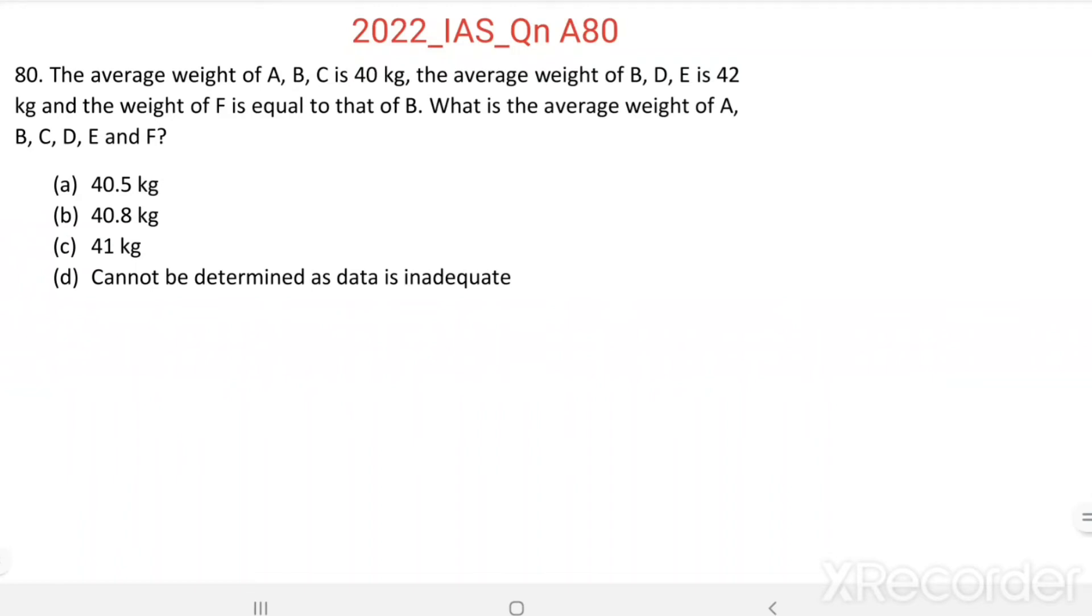Question number 80. The average weight of A, B, C is 40 kg. The average weight of B, D, E is 42 kg. And the weight of F is equal to that of B. What is the average weight of A, B, C, D, E, and F?